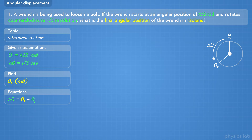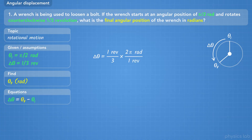The problem is asking us to find the final position in radians, and the initial position is already in radians, so let's convert the angular displacement. We write out 1 third revolutions, then multiply by the unit relationship of 2 pi radians per 1 revolution. The revolutions cancel, and we get 2 pi over 3 radians.